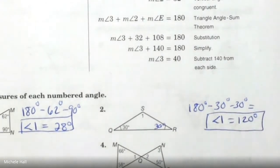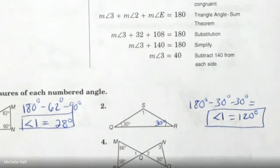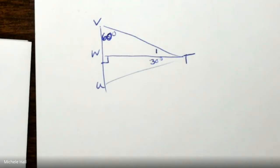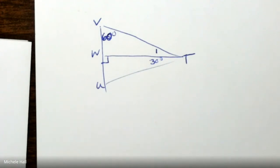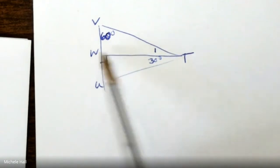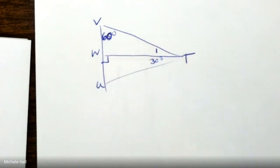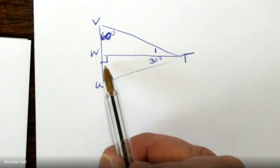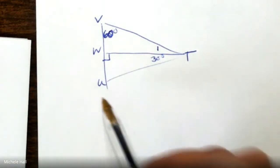We've got to be looking inside the triangles, and we've got to be looking for markings that are going to help us find other angles. Number 3 — we've really got three triangles here: two small ones and one large one. Which triangle should we start in? Name the triangle — you always have to have a starting place. WTU, because it has two angles in it. This one is 30, so what do I do to figure out the third one?